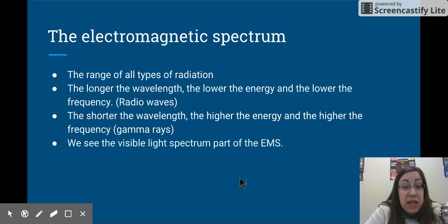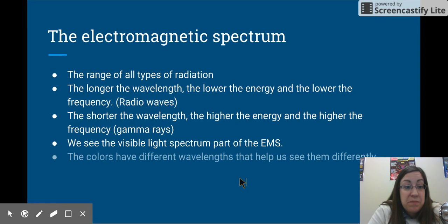We can see the visible light part of the electromagnetic spectrum. And colors in that part have different wavelengths, and that's what helps us see them differently. Red has the longest wavelength, and violet or blue has the shortest wavelength. So, we see colors differently because they have different wavelengths. If you need to pause right now, pause and make sure you have all of that written down.